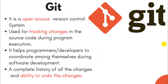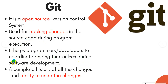Now let's talk about Git. Git is an open source version control system. It is used for tracking changes in the source code during program execution. It helps programmers and developers to coordinate among themselves during software development. It maintains a complete history of all the changes and provides the ability to undo those changes.